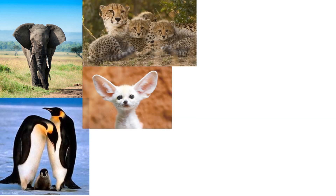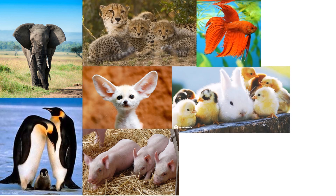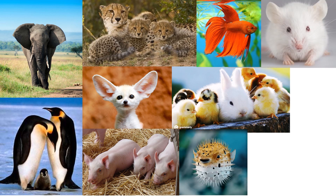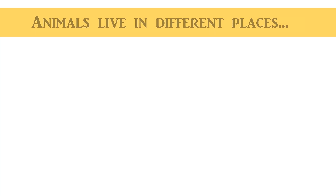There are many different kinds of animals in the world. They provide a lot of things such as food and materials for us. Can you name some of these animals? Animals live in different places that provide them with food and shelter.